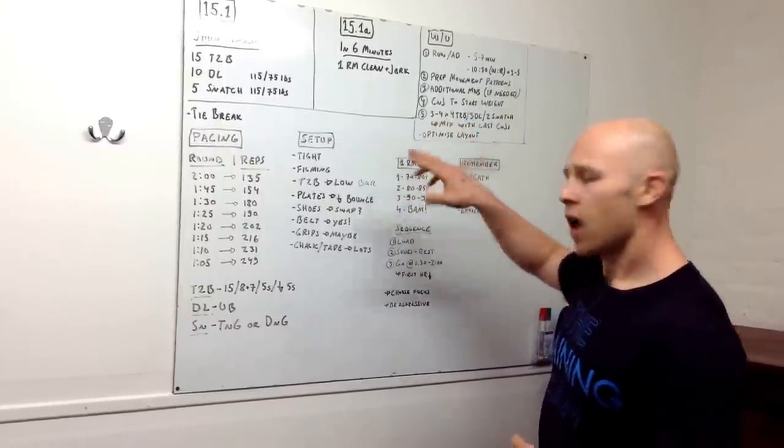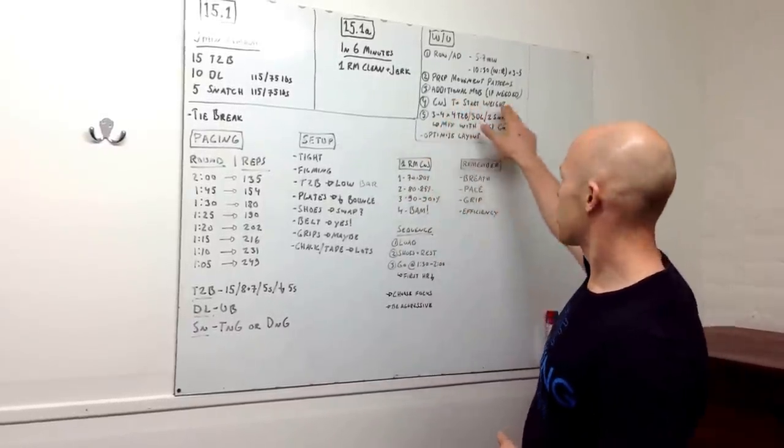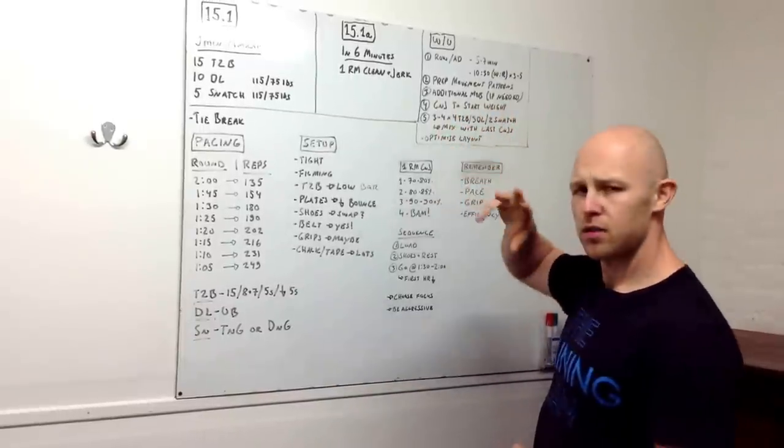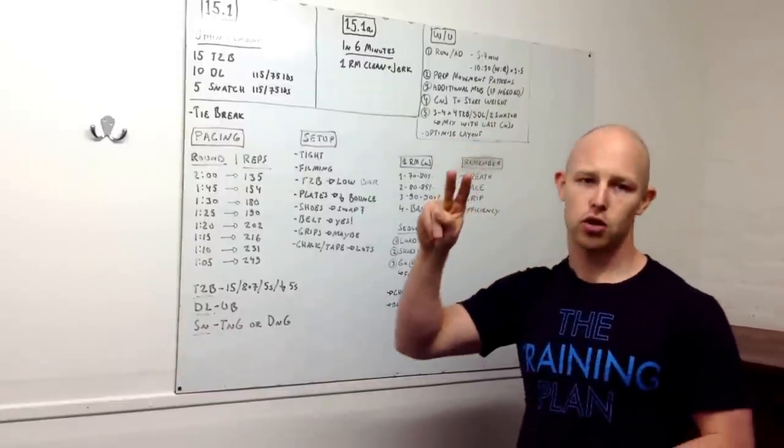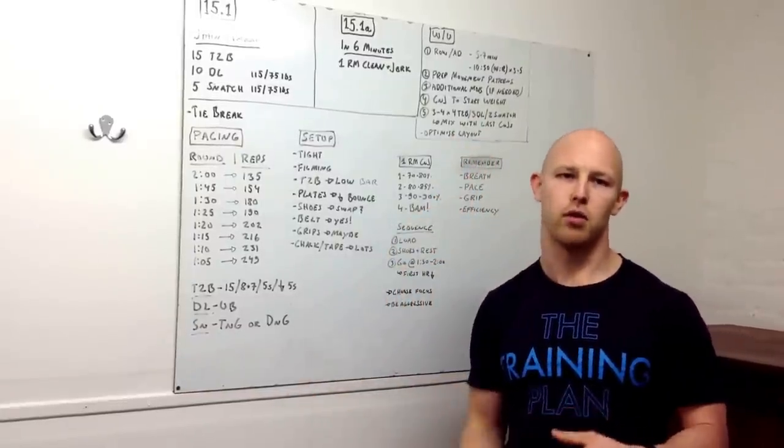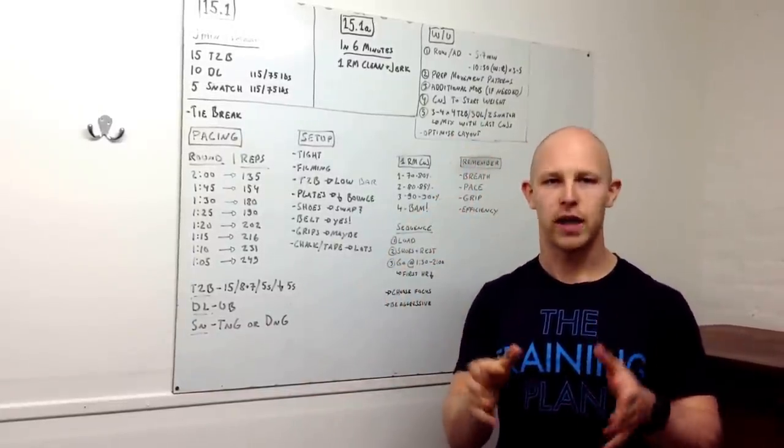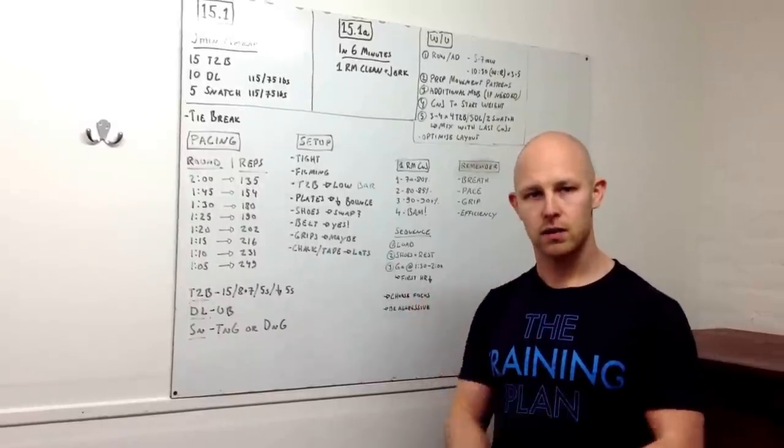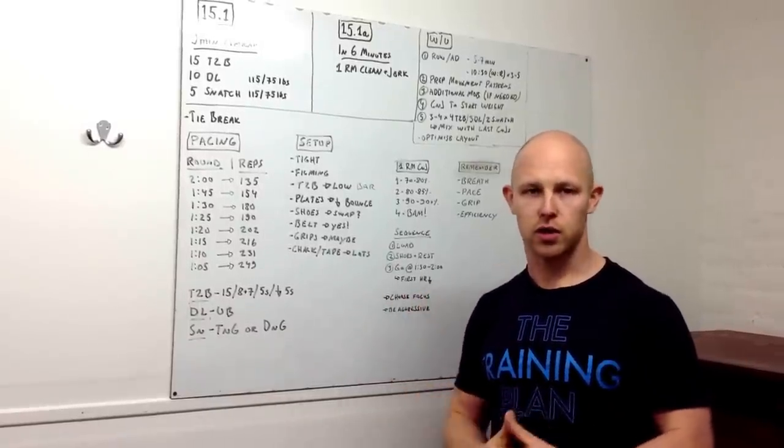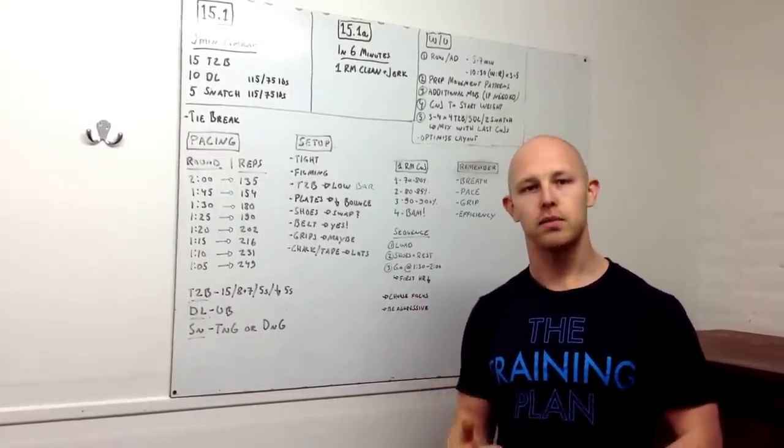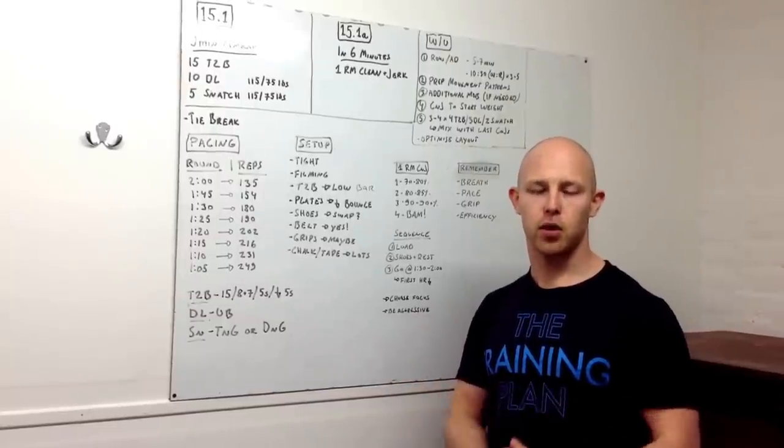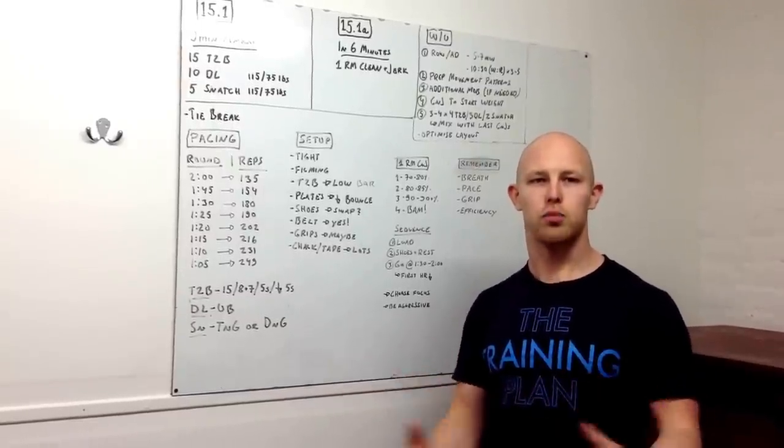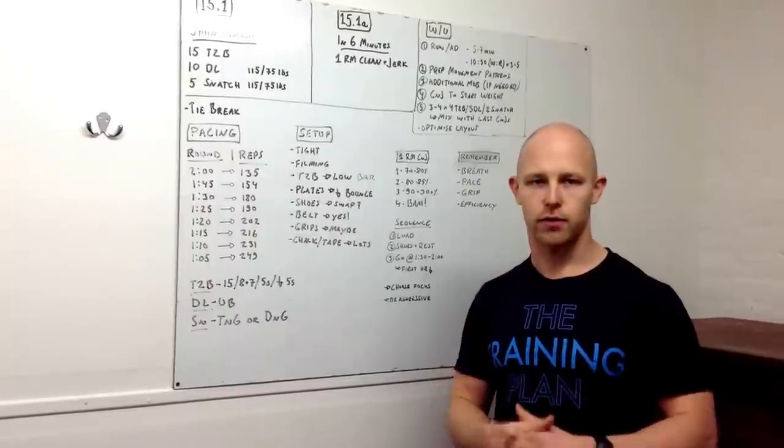And then, with the last few repetitions on the clean and jerk, between the last three or four reps, do four toes-to-bar, three deadlifts, two snatch. Could it be three, three, three. Could it be four, four, four, five. It doesn't matter. You get to choose. Low repetitions. Do a round of that. Take a breather. Go and do your clean and jerk. Rest and repeat. Just to get the feel. How it's going to feel like after doing the 15.1. And also, to start to prep those movements for the actual first piece.